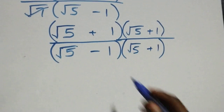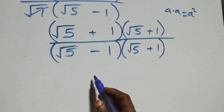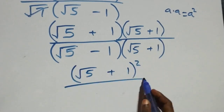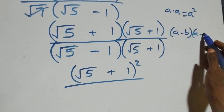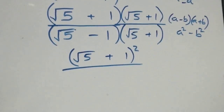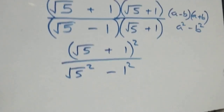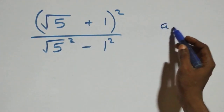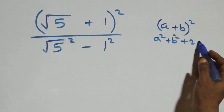From here we have a square, and from here we have a squared. The numerator becomes (root five plus one) all squared. The denominator follows the difference of two squares: (a²  − b²), here standing as root five squared minus one squared.